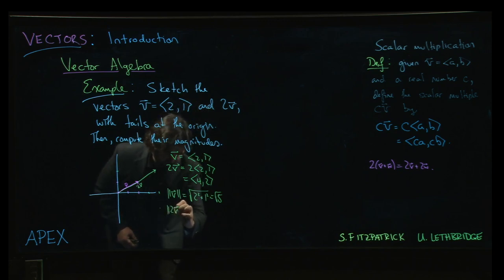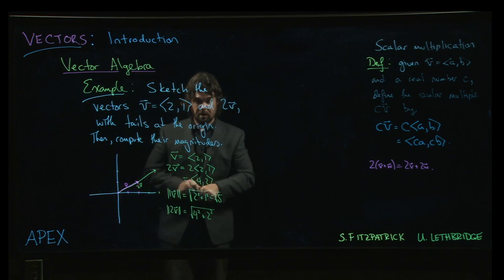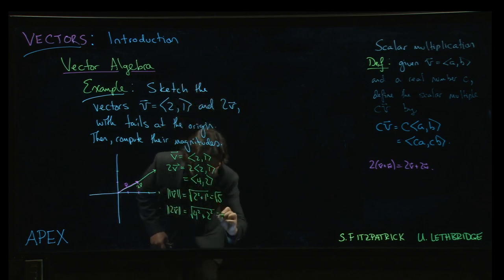The magnitude of 2v, so that's 4 squared plus 2 squared, 16 plus 4 gets me to the square root of 20.